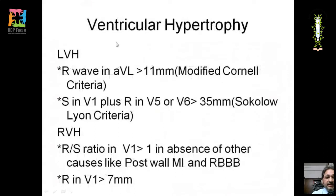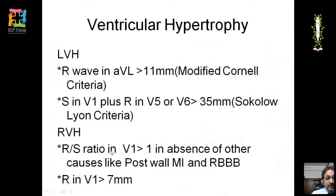For left ventricular hypertrophy (LVH), the R wave in AVL greater than 11 mm satisfies the modified Cornell criteria. Alternatively, S wave in V1 plus R wave in V5 or V6 greater than 35 mm satisfies the Sokolow-Lyon criteria. For right ventricular hypertrophy (RVH), the RS ratio in V1 greater than 1 (excluding posterior MI and RBBB) or R wave in V1 greater than 7 mm are the criteria.